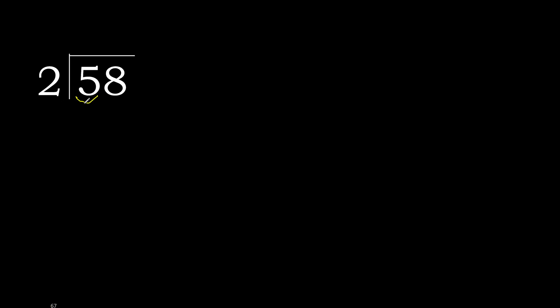58 divided by 2. 5 is not less, therefore with 5, find which number multiplied by 2 is nearest to 5 but not greater. 2 multiplied by 3 is 6 — 6 is greater. 2 multiplied by 2 is 4, which is not greater. 5 minus 4 is 1.